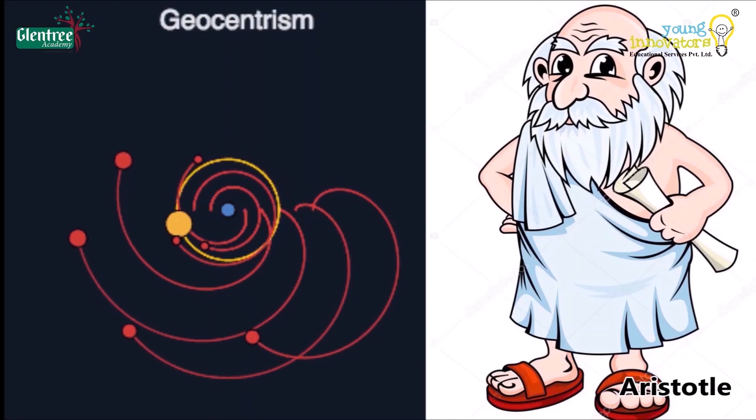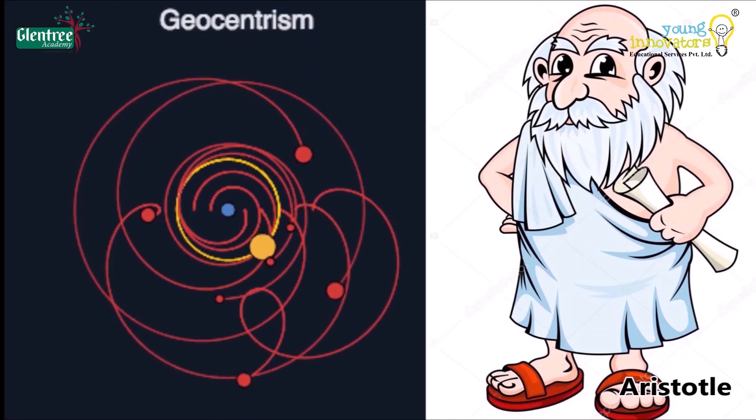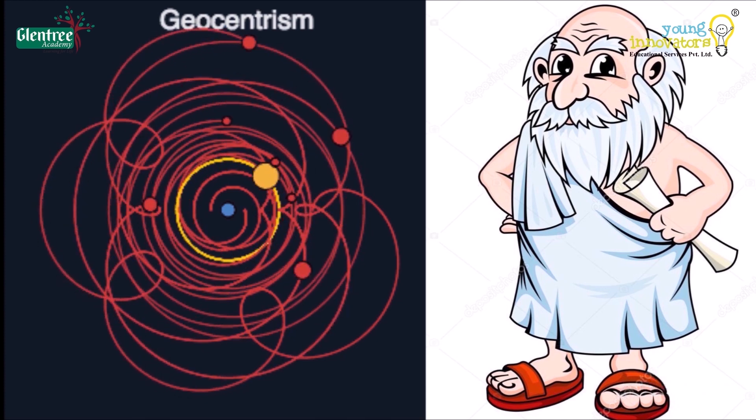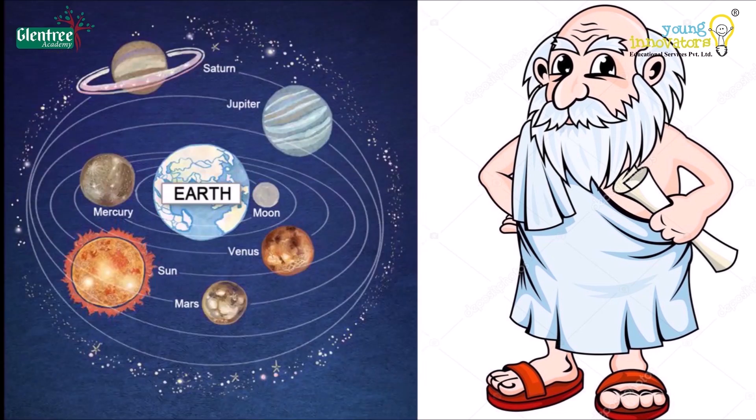Aristotle, a great scientist and a philosopher, who believed that everything in the sky seems to go around us. Hence, we must be the center of all the celestial objects.